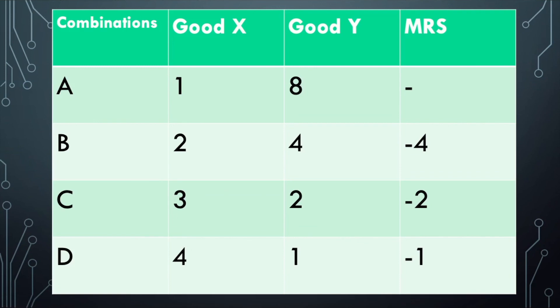which is minus 1. When we take the MRS in absolute value terms, we can see that it declines as we move from combination B to D.